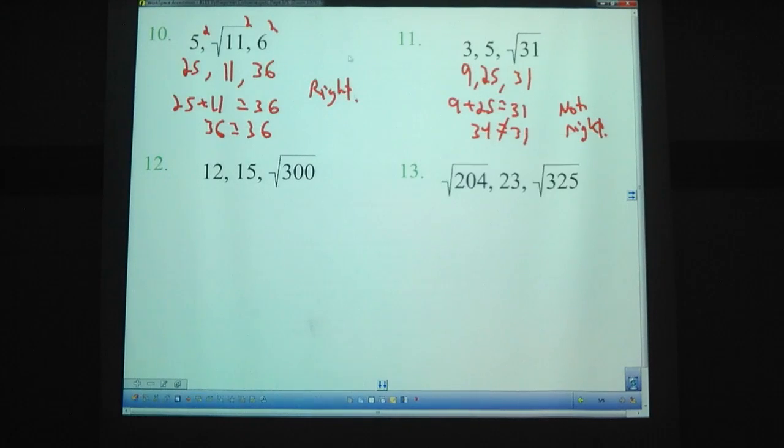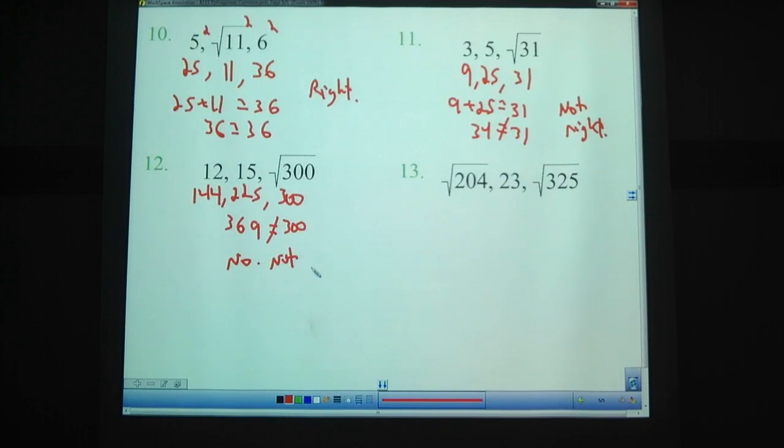Try out these two here. You may want a calculator for some of them. In fact, you will. Make sure you square them first so you know which one's the biggest and then go from there. Problem number 12. 12 squared, 144. 15 squared, 225. Square root of 300 squared is just 300. Add these two up. They don't make 300. 369, which is not the same as 300. So that one's not right.